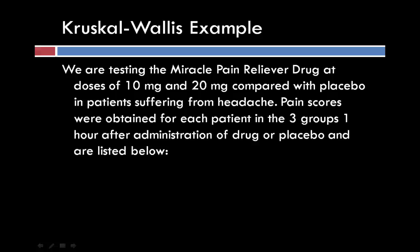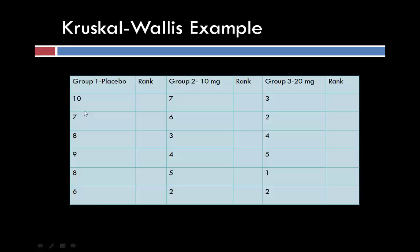Pain scores were obtained for each patient in the three groups one hour after administration of the drug or placebo. We have our three groups: group one is placebo with the respective pain scores, group two is our 10 mg group, and group three is our 20 mg group.